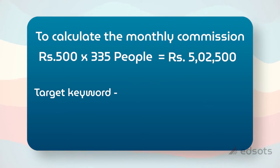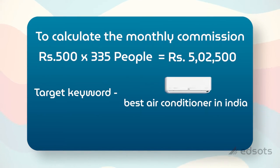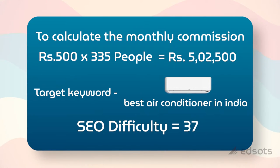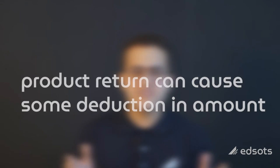Also, for the air conditioner target keyword — 'best air conditioners in India' — the SEO difficulty is not very high; it is only 37. So you can also pick air conditioners as your final product for affiliate marketing. But always remember, there will be deductions because of returns by customers. However, the amount you can earn for ranking a number-one page for air conditioners is still very high.